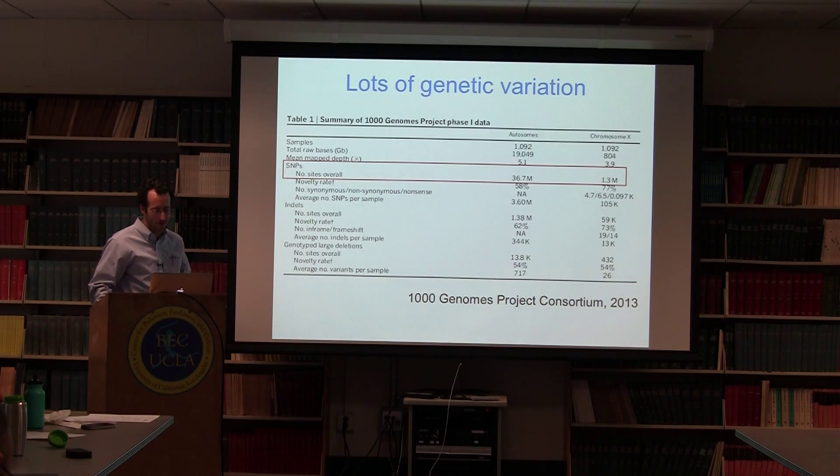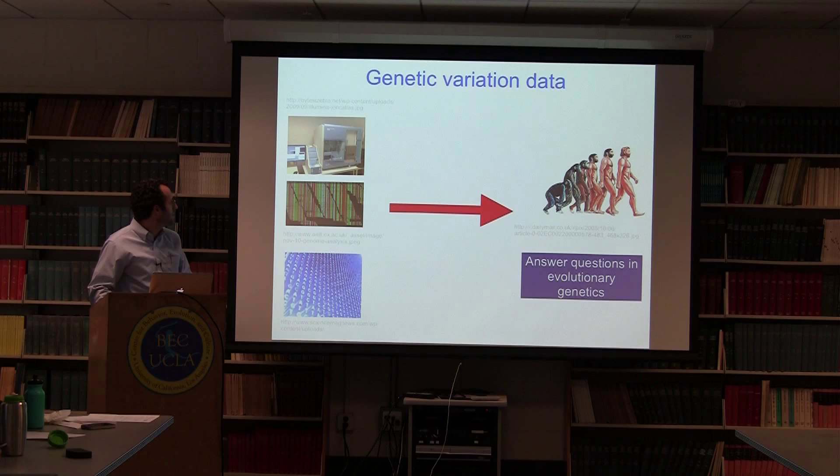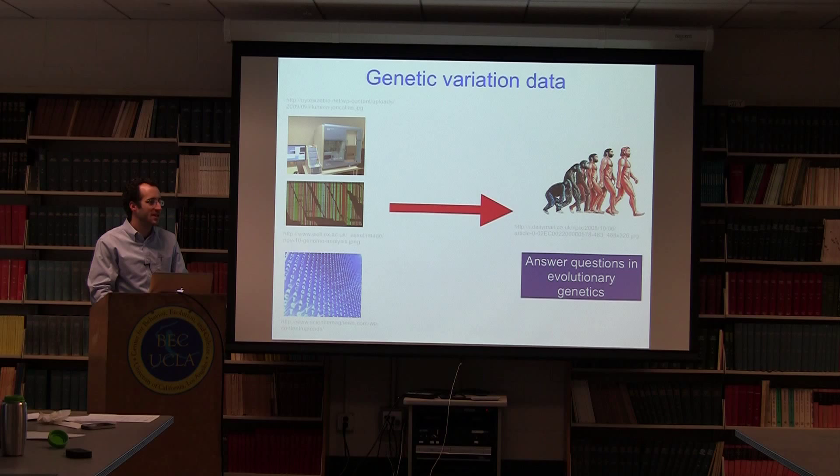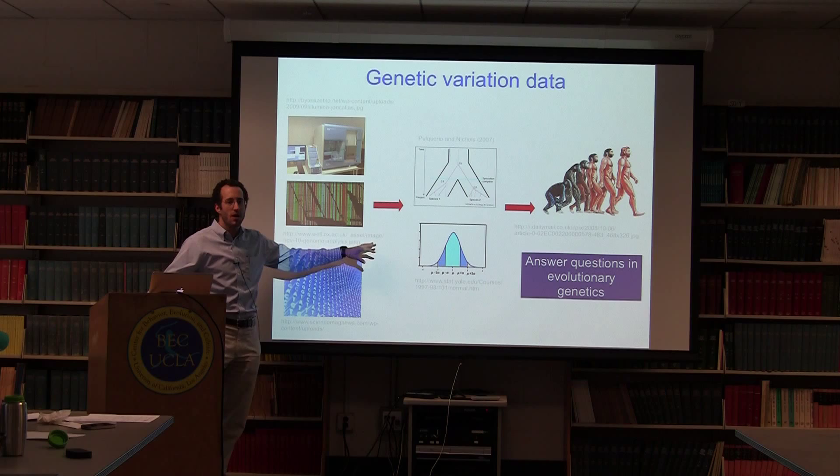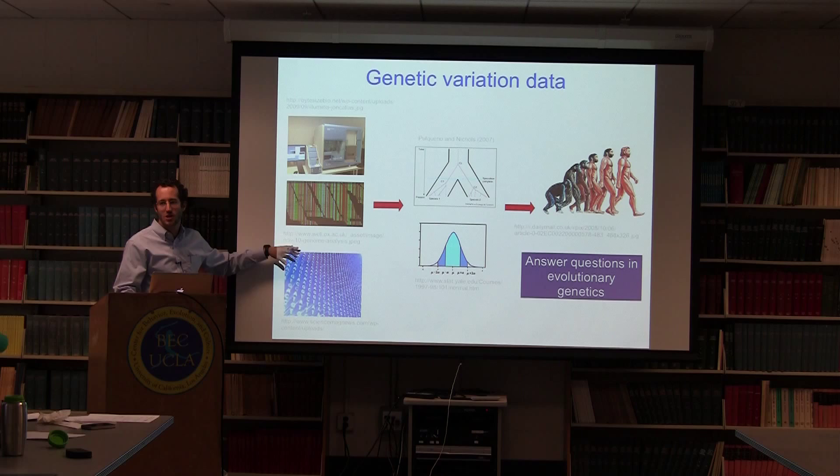What we would like to do is use this kind of genetic variation data to answer questions in evolutionary genetics. While that may seem straightforward, the types of signals we are looking for are often quite subtle, so we need population genetic models and statistical approaches to detect subtle signals in genetic variation data and make accurate inferences in evolutionary genetics.